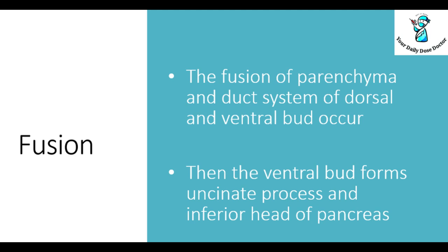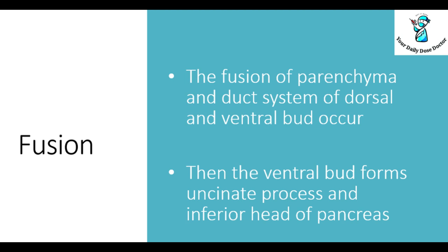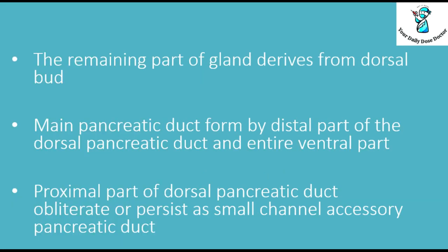After settling down below the dorsal bud, fusion occurs — the fusion of the parenchyma and the ductal system of the dorsal and ventral buds. Then the ventral bud forms the uncinate process and the inferior head of the pancreas.